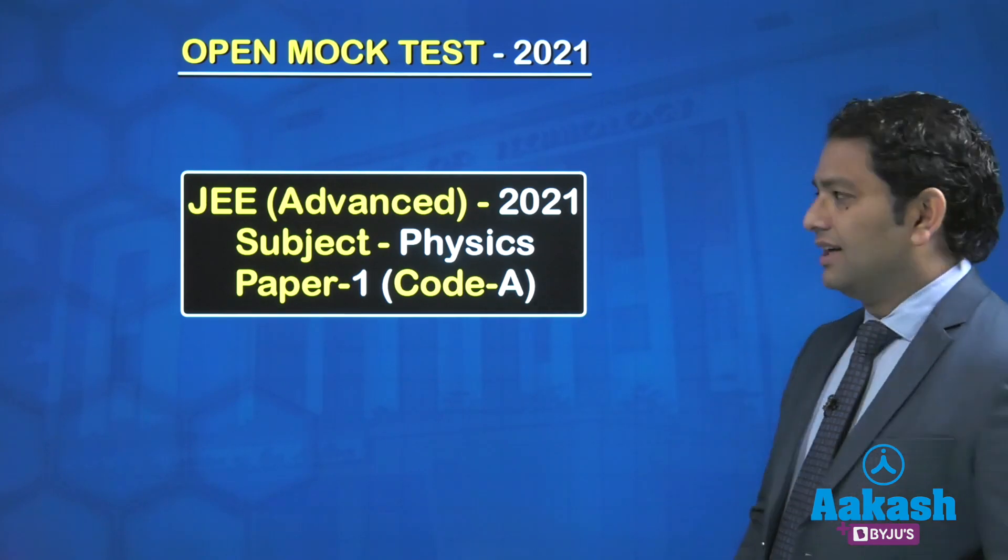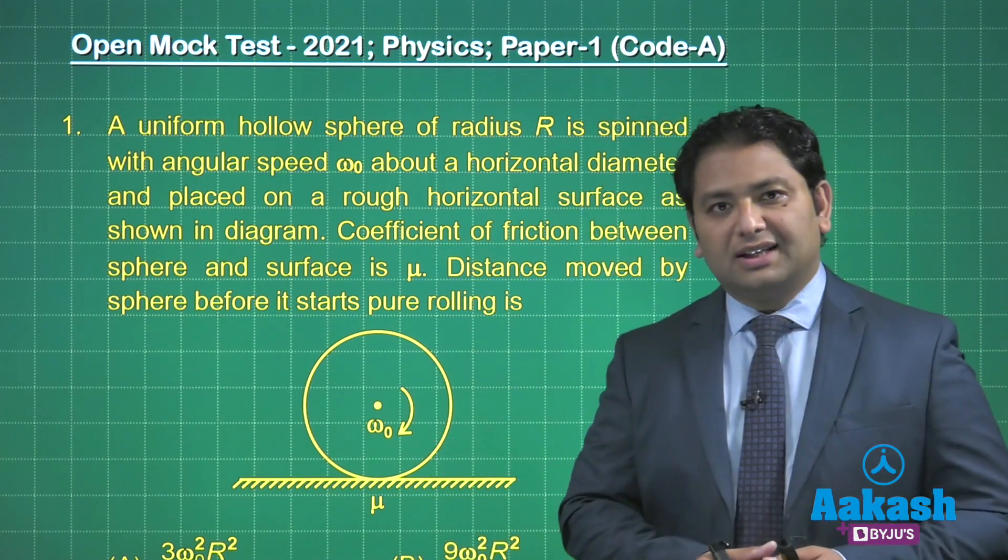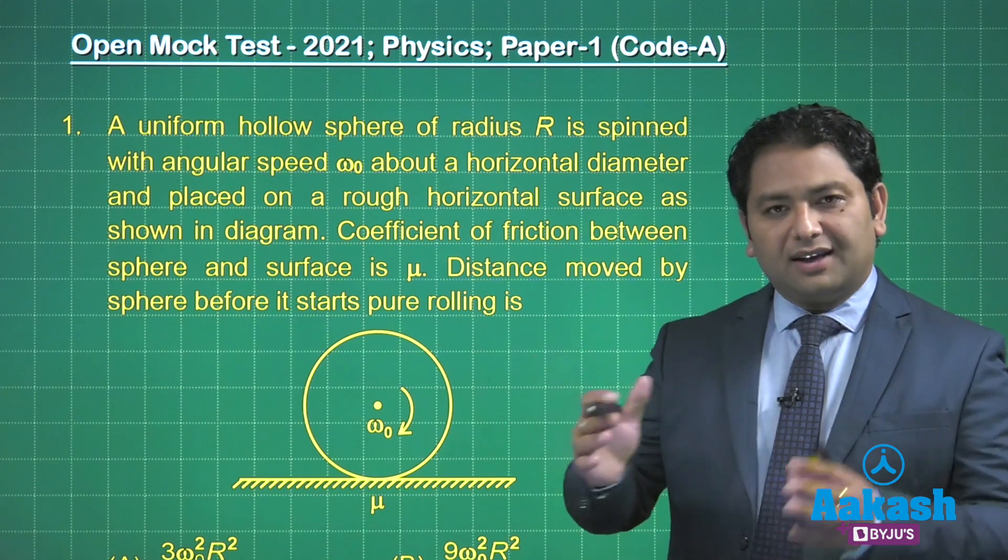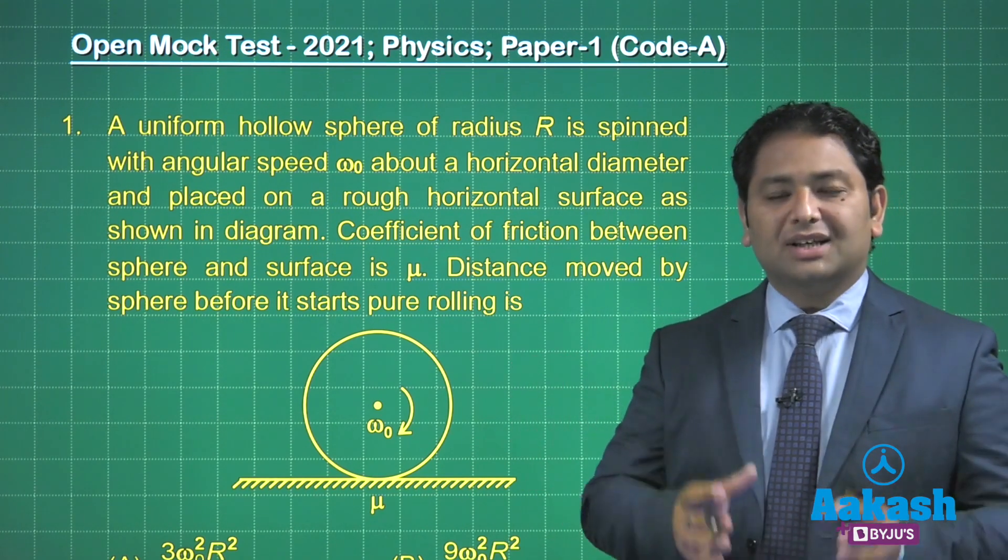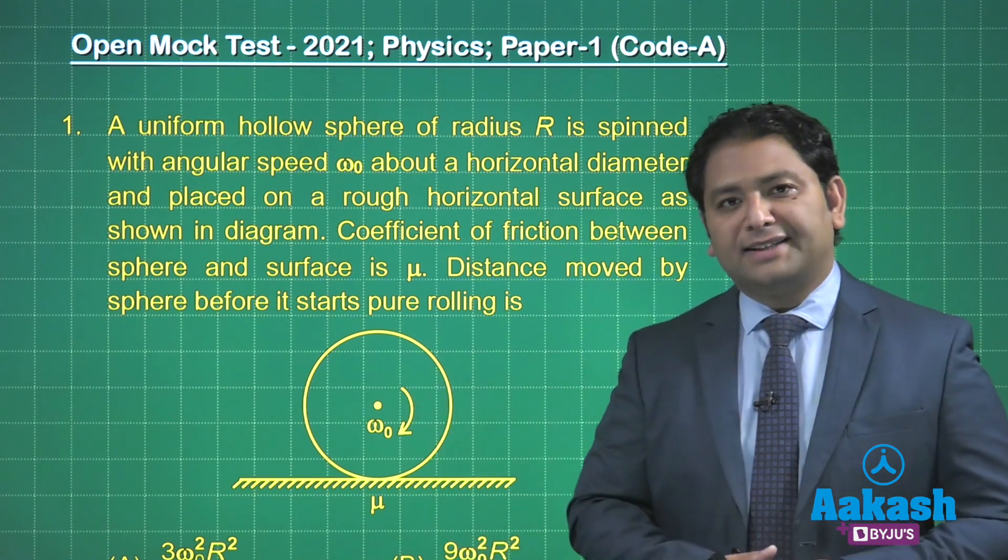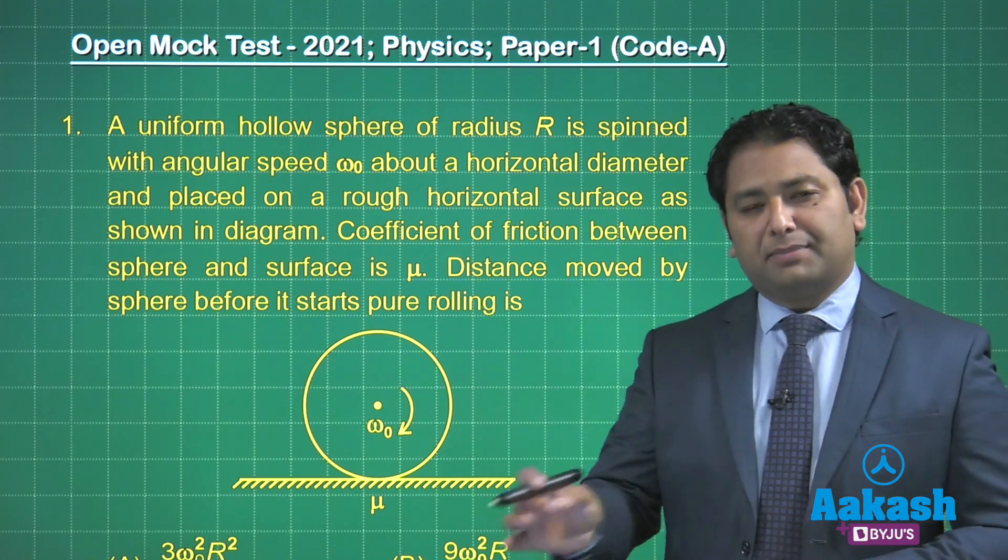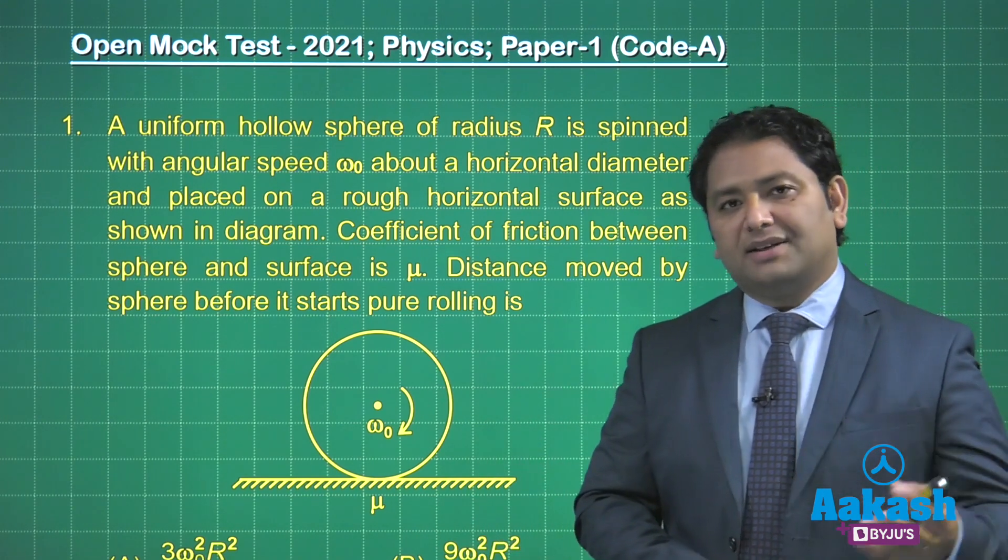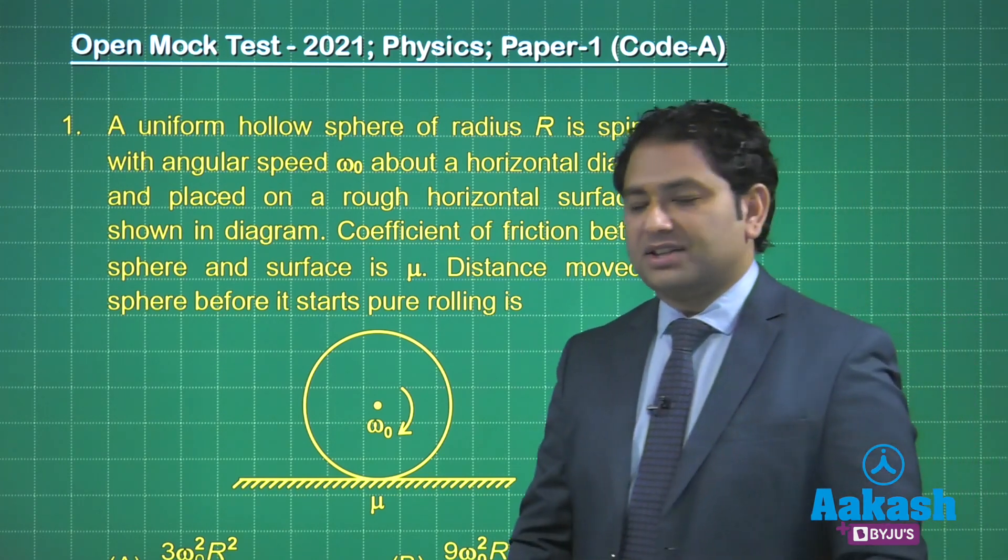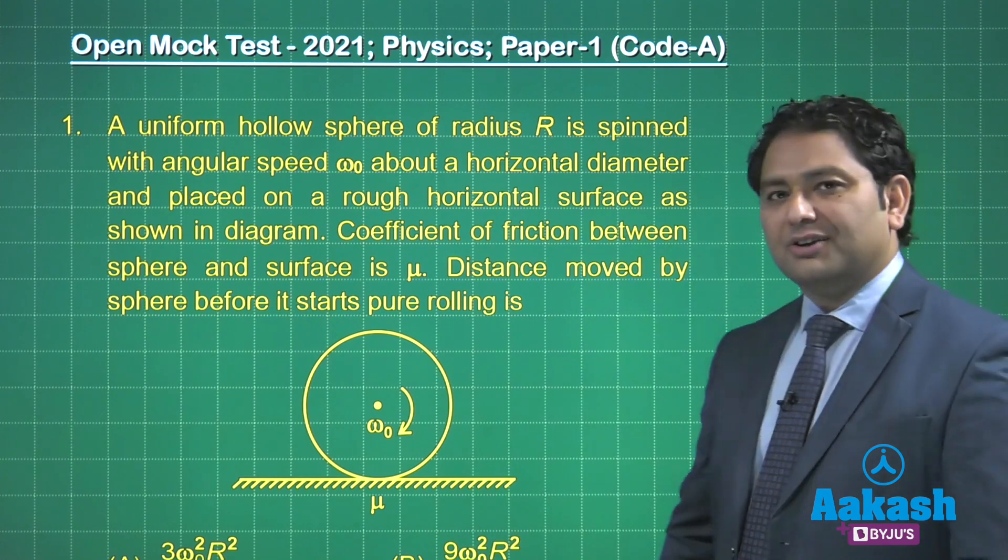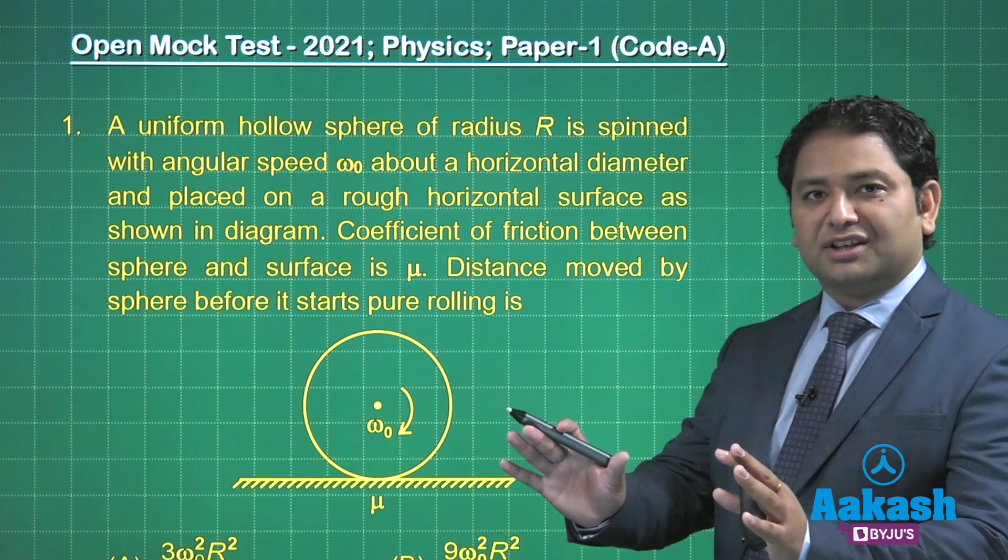Let's begin. The first question I have here is from rotational motion. The initial questions, the six questions, would be based on single option correct. We'll also have another variety, which is multiple options correct. And finally, in this paper, paper one, we also have the numeric based questions.